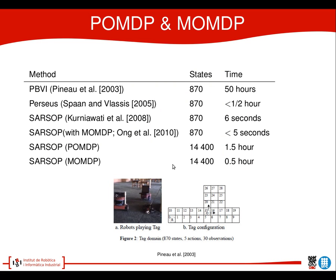Here I'll show you a small table of some experiments done by other authors, using different solvers to generate a policy for different partially observable Markovian decision processes. They used the game tag in which one robot has to catch another one. We see the map of 29 positions, and since the state is the combination of both players, we have 870 states. One state is the state of being tagged. On the right column we see the time it took to calculate the policy offline, and we see clearly that SARSOP is the fastest.